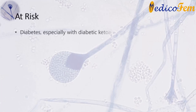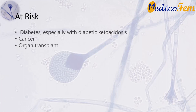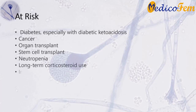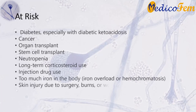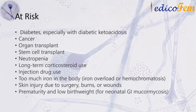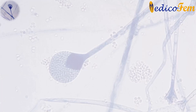Certain groups of people are more likely to get mucormycosis, including people living with diabetes (especially with diabetic ketoacidosis), cancer, organ transplant, stem cell transplant, neutropenia, long-term corticosteroid use, injection drug use, too much iron in the body (iron overload or hemochromatosis), and skin injury due to surgery, burns, or wounds.